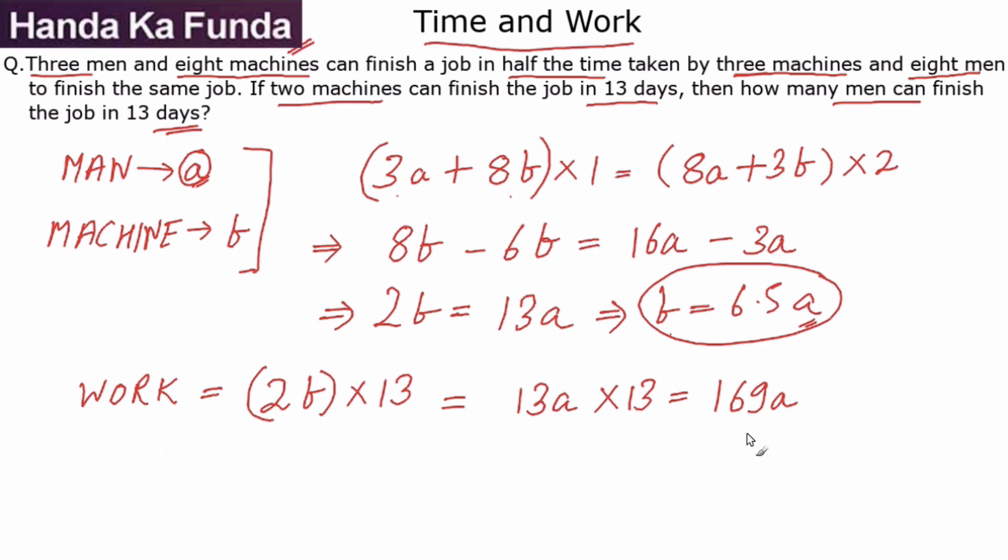Now the question is, how many men can finish the job in 13 days? So if I divide the amount of work that needs to be done by the time given to me, that will give me the number of people required. So 169a, or 169 man-days, is the work that needs to be done. This will be done in 13 days, so I need 13a, or I need 13 men to do this job, making my answer as 13.